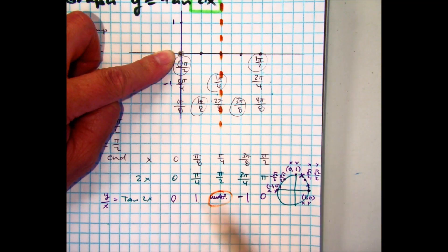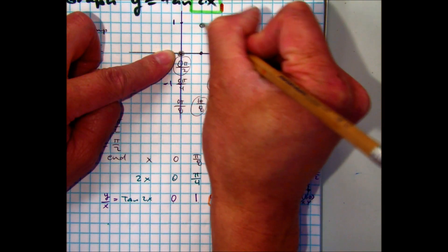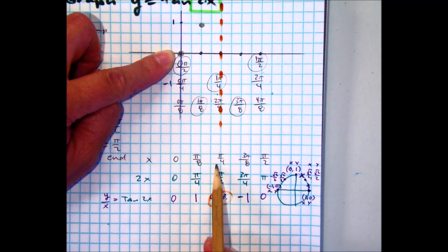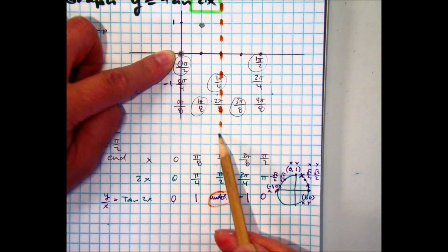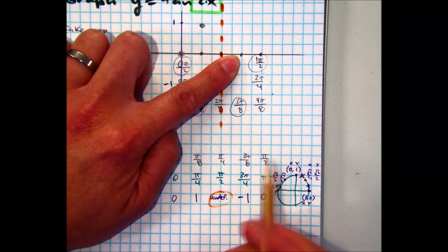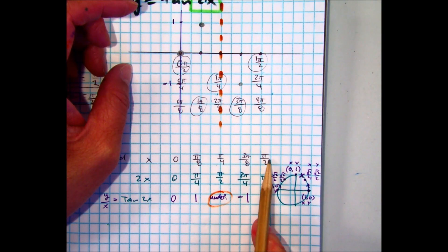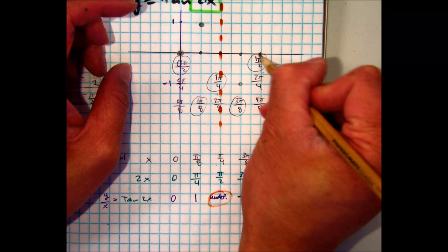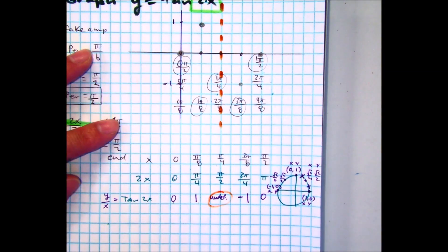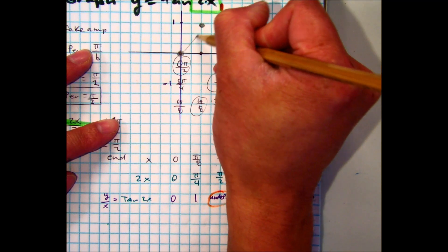And then I can go back now and graph all the other ones. At 0, I have 0. At pi over 8, I have 1. Pi over 4 is undefined. At 3 pi over 8, I have negative 1. And at pi over 2, I have 0. So right now, my graph looks something like this.